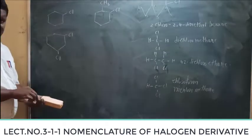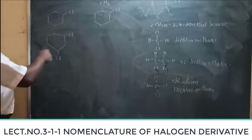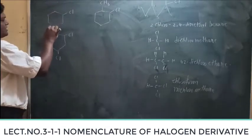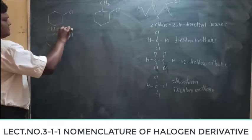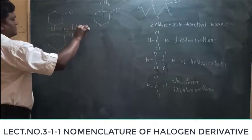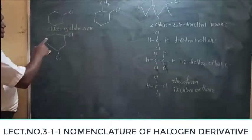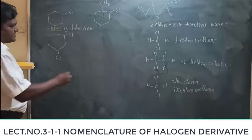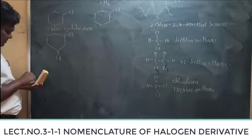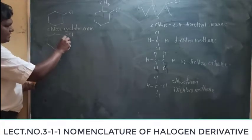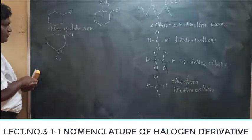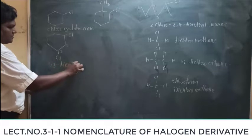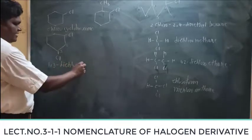The IUPAC name for a cyclic compound — you will find this is cyclohexane with one chlorine, so it is chlorocyclohexane. The next compound is also cyclohexane with two chlorine atoms. You number the ring: one, two, three — giving the IUPAC name 1,3-dichlorocyclohexane.